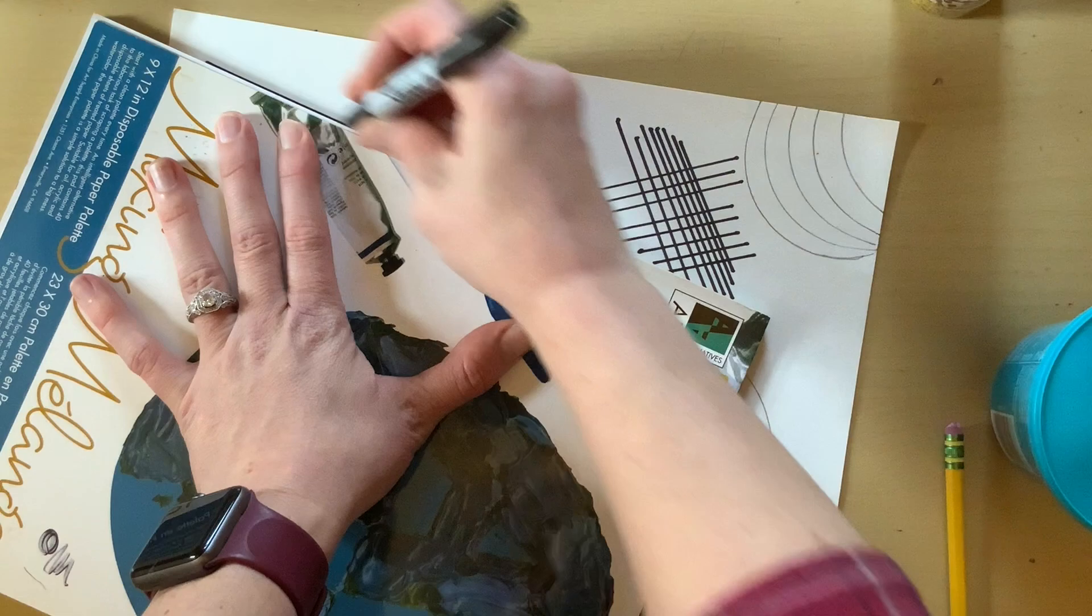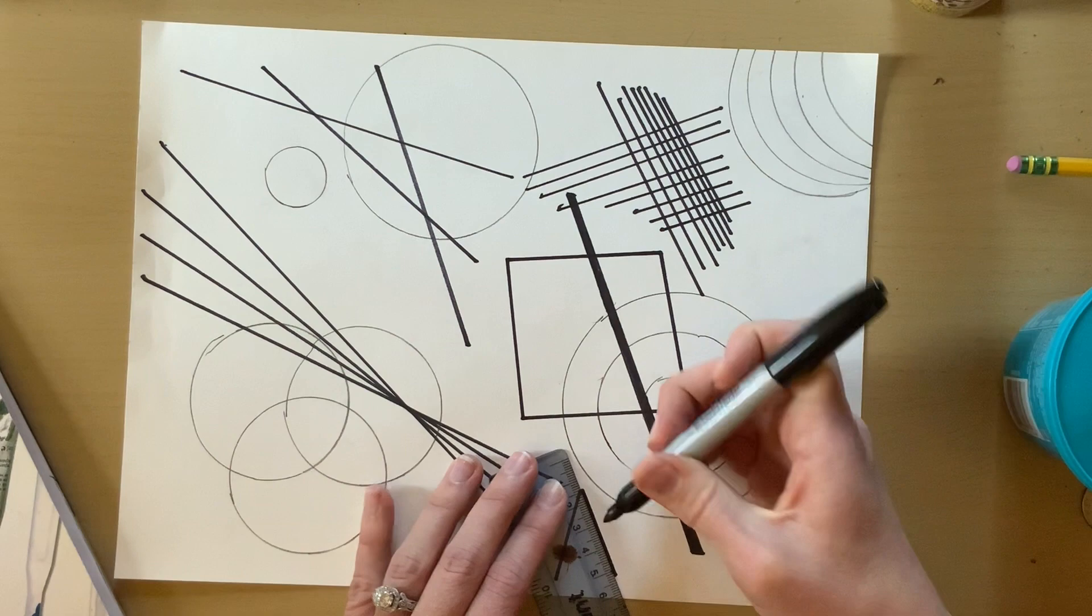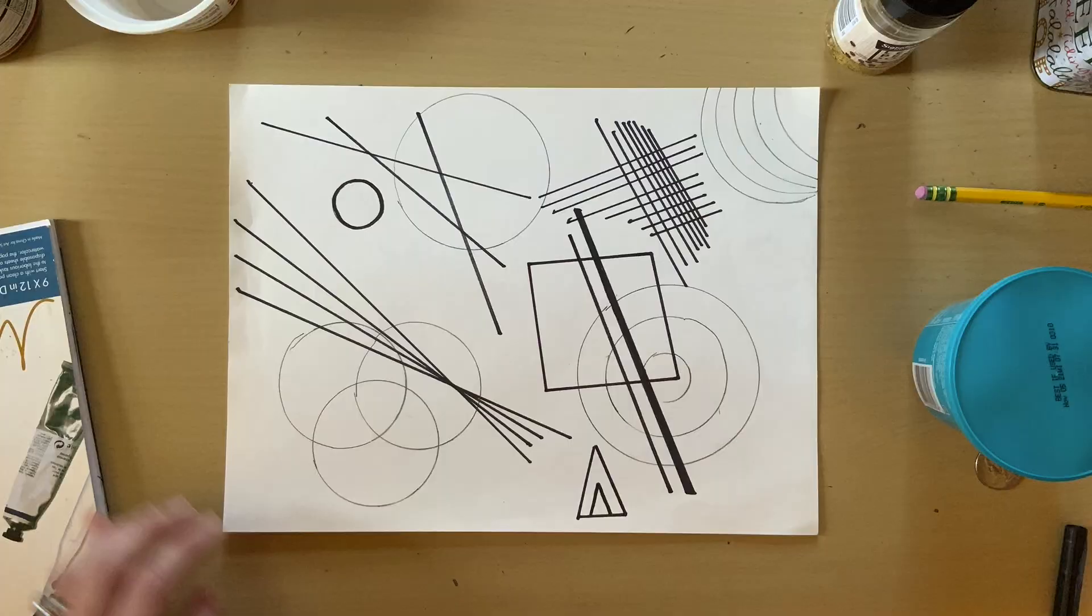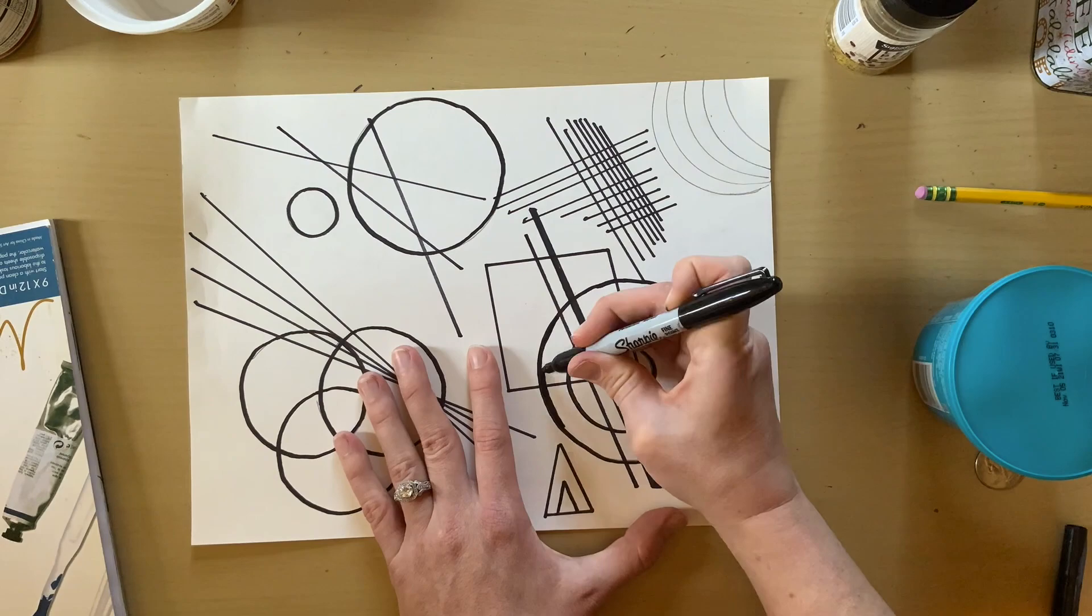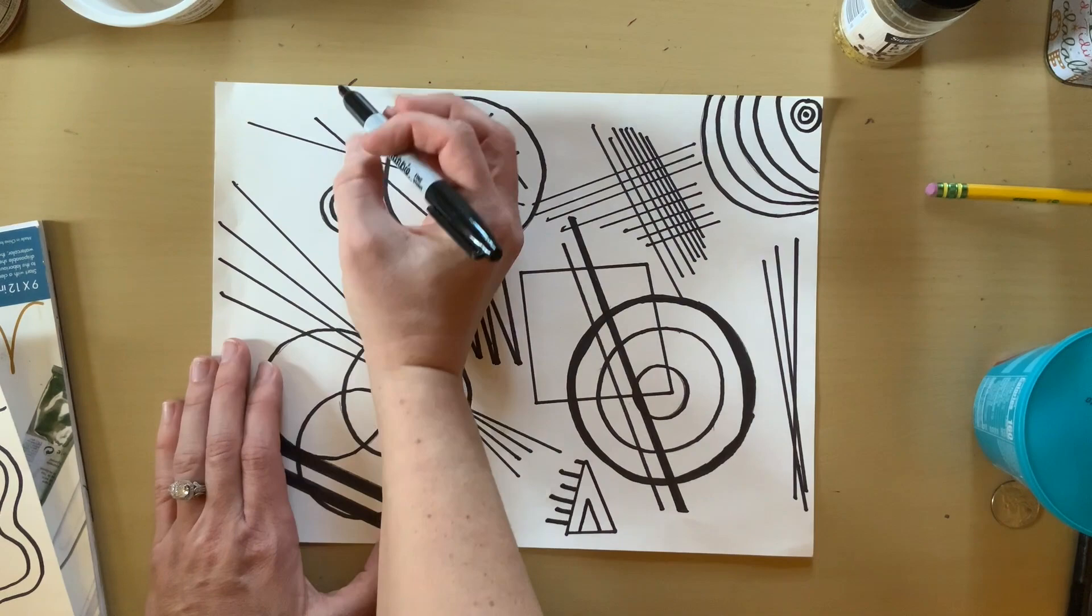Then you can add some more shapes like triangles and squares. You can go over all of your lines with Sharpie and then add some organic shapes which are shapes that you make up. So they're wiggly, they're wavy, and they don't have names.